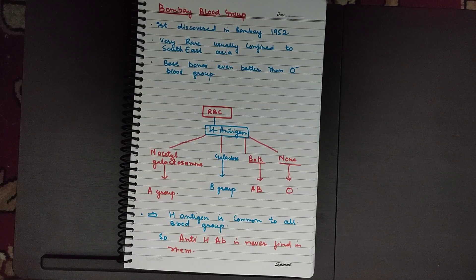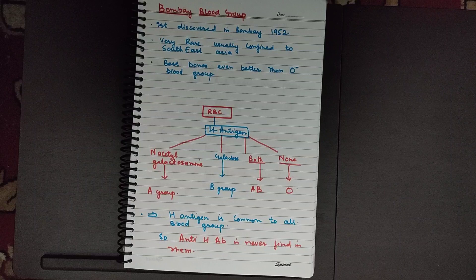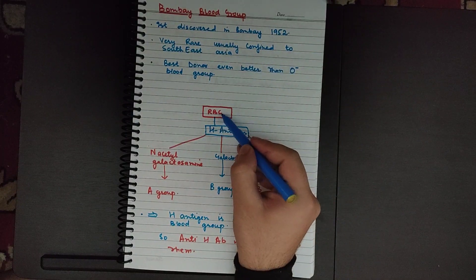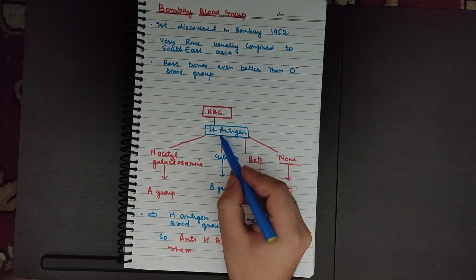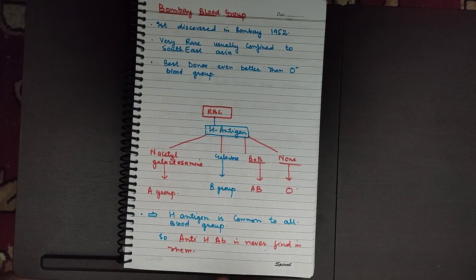Hello students, I'm Dr. Faisal and you are watching Bio Ocean Classes. Let's get started. Before understanding the Bombay blood group, we need to go into a little depth of the ABO system, which we covered in the previous video. The RBC possesses a primitive antigen known as the H antigen.